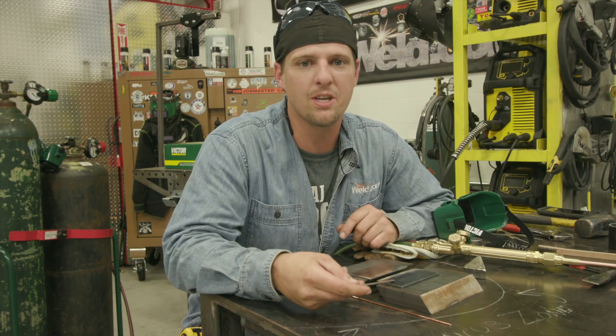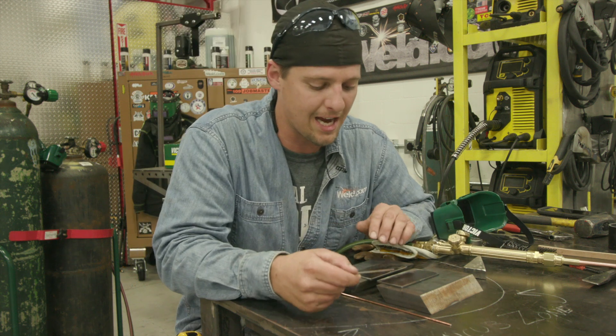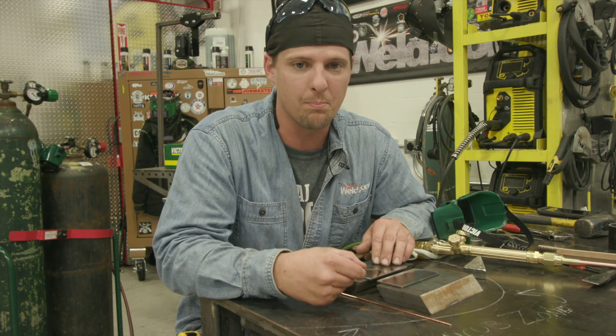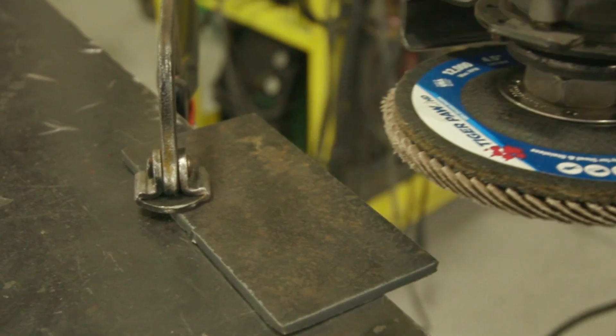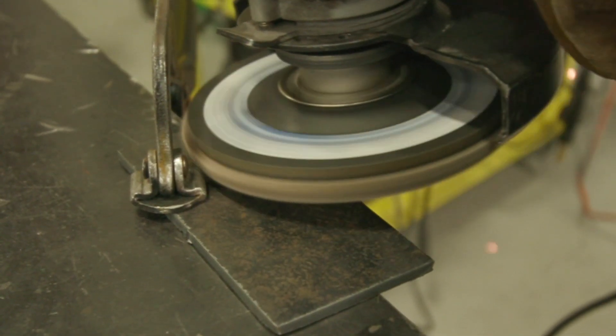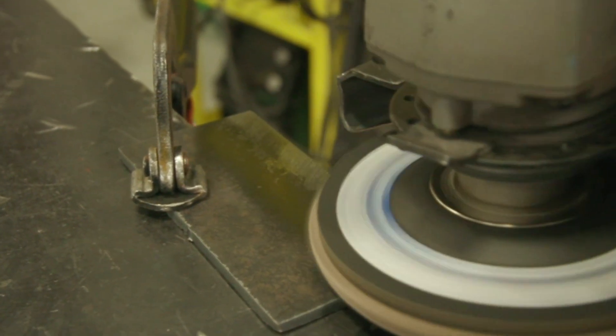Hey guys, today we're going to be using an oxy-fuel torch, doing a little gas welding. Right here, open root, square butt, on carbon steel. So I already cleaned the mill scale off right here, guys. You see it? I did it on both sides.